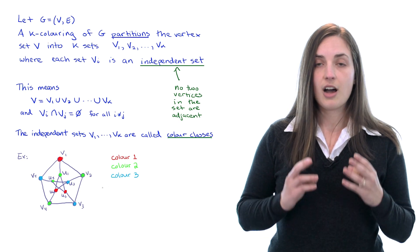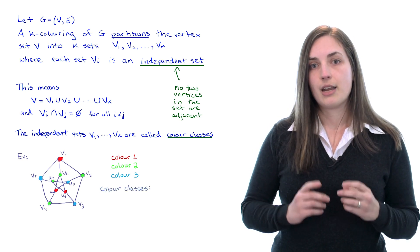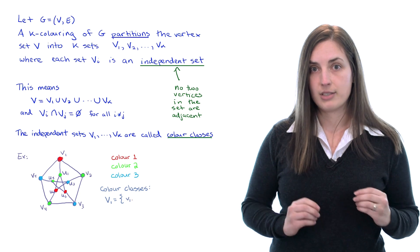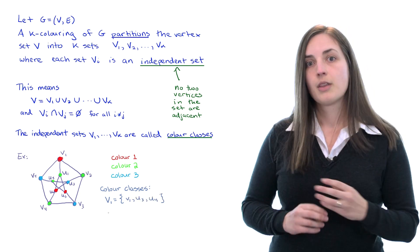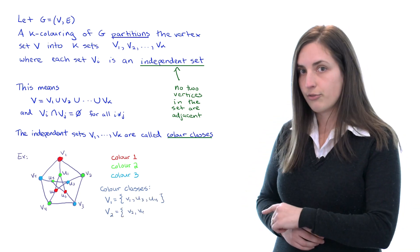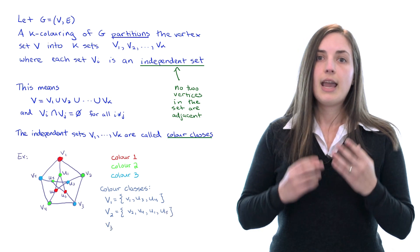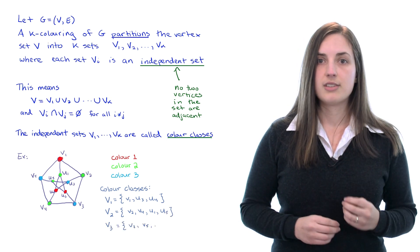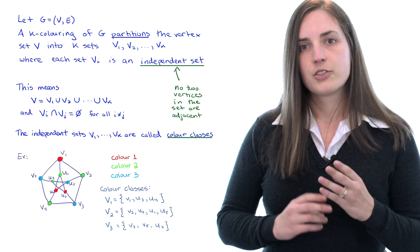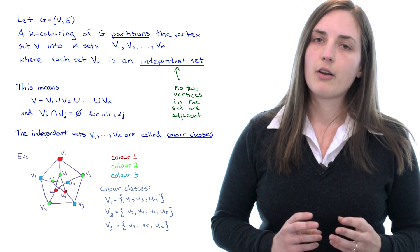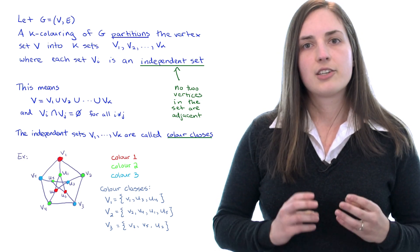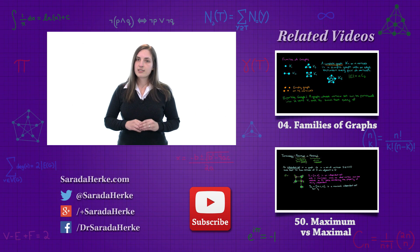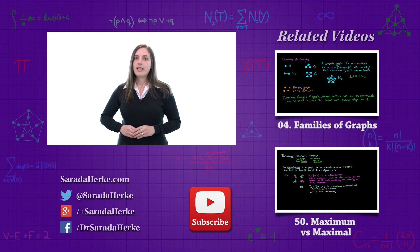So we can write down the color classes by just writing V_1 is the set of all vertices which were given the red labels and V_2 is the set of all vertices which were given the green labels and V_3 is the set of all vertices which were given the blue labels. So there's an example of a three coloring of the Petersen graph and a description of its color classes. So this was an introduction to vertex coloring and we'll see a lot more of it in future videos.